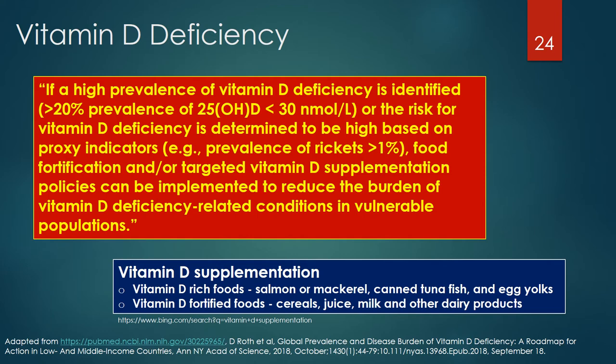Vitamin D-rich foods and drinks include salmon or mackerel, canned tuna fish, and egg yolks, as well as vitamin D-fortified foods like cereals, juice, milk, and other dairy products.